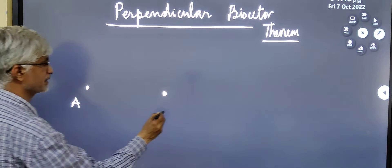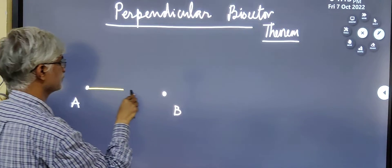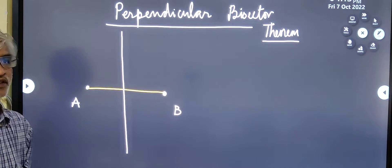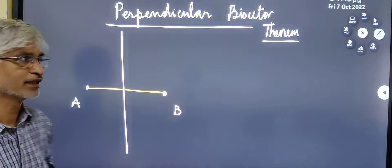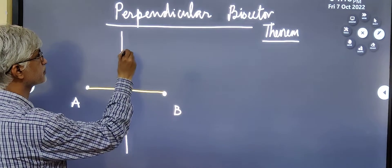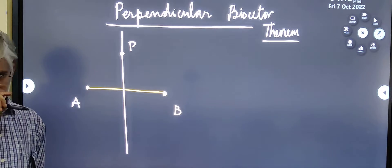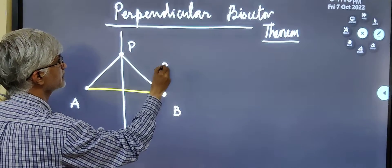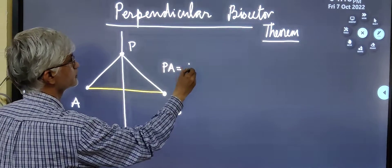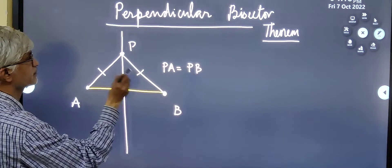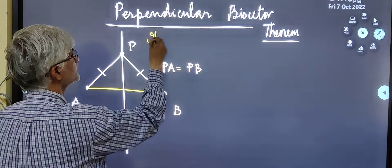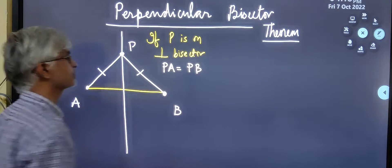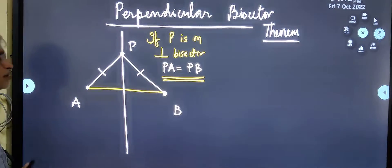If you take any segment AB and draw a perpendicular bisector on it — this is a very popular construction that all of us know how to construct — if you are anywhere on the perpendicular bisector, so let's say you have a point P on the perpendicular bisector, then it is very easy to prove that PA is equal to PB. In other words, these two segments are equal in length. So, if P is on the perpendicular bisector, then PA equals PB. This is the statement of the perpendicular bisector theorem.